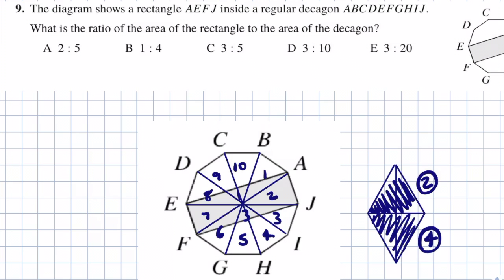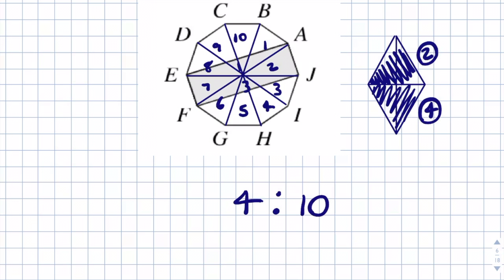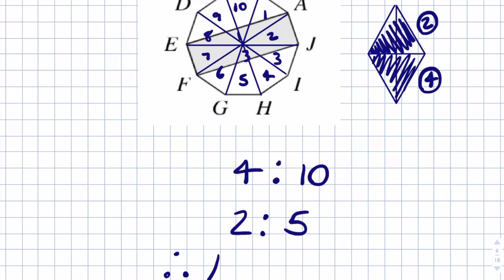The ratio of the area of the rectangle to the area of the decagon is 4 congruent triangles to 10 congruent triangles. Dividing both sides by 2 gives 2 to 5. Therefore answer equals A.